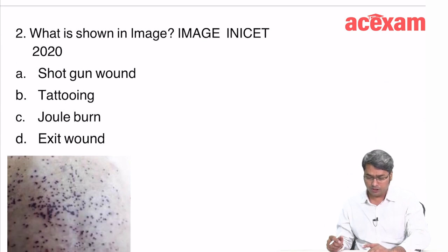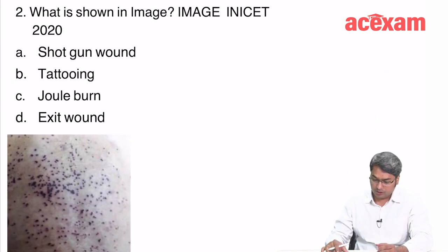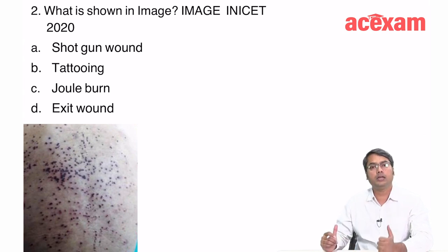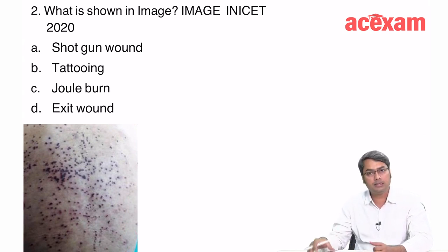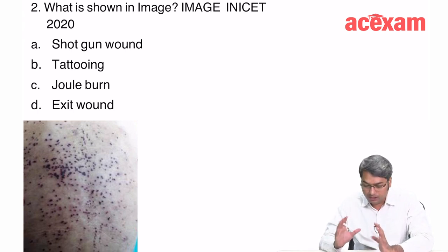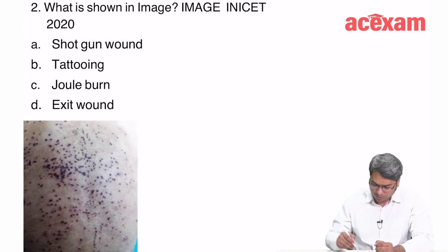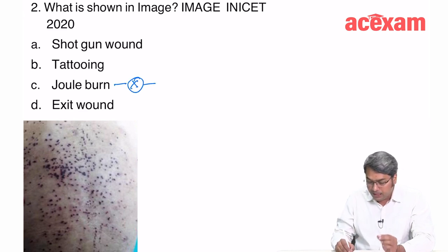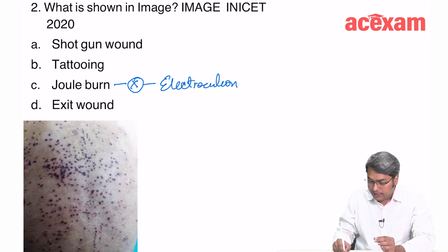The next question — 'What is shown in the image?' — is an image-based question from INICET 2020. Questions on traumatology can be image-based and are very important, so we have to deal with this topic systematically. The image shows different dots. This is not a Joule burn, which is produced by electrocution and does not look like this.